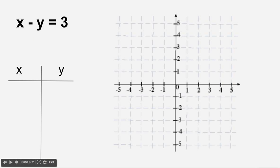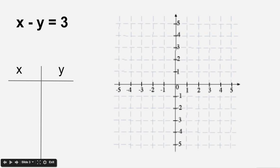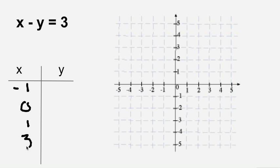However, your equation is not just a point because it's actually what's called a line. We only plugged in 2 for x, but if you plug in other values for x — such as negative 1, 0, 1, or 3 — and solve for y, you'll get answers of negative 4, negative 3, negative 2, and 0 respectively.